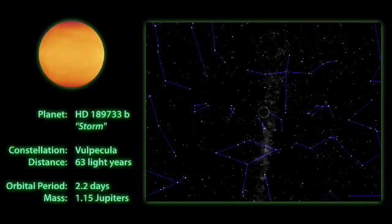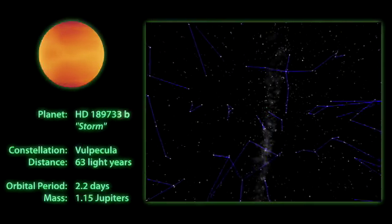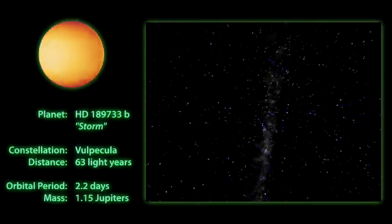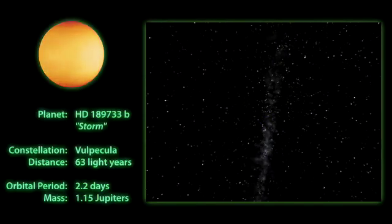A little closer to home, our other X-Planet, Storm, can be found in the constellation Vulpecula at a distance of 63 light-years.